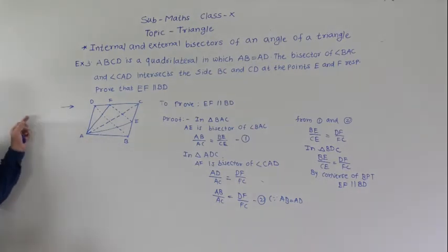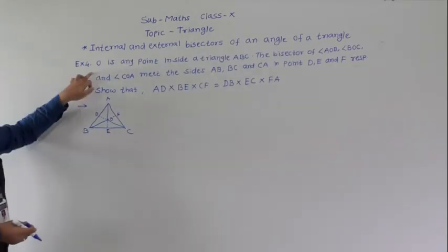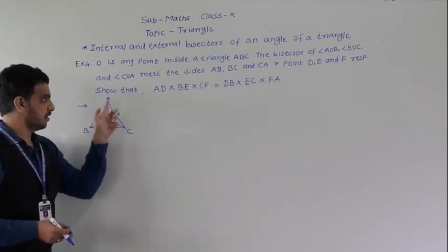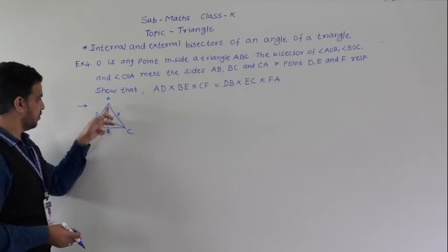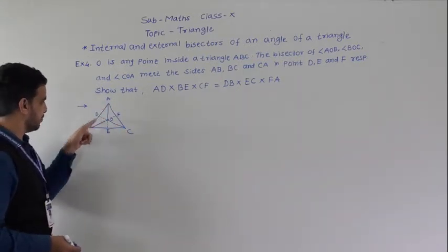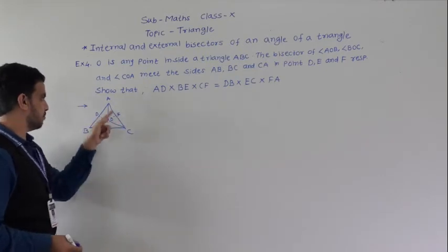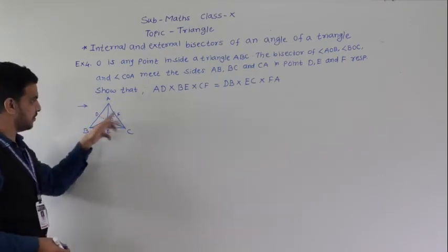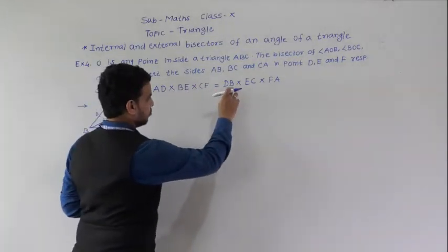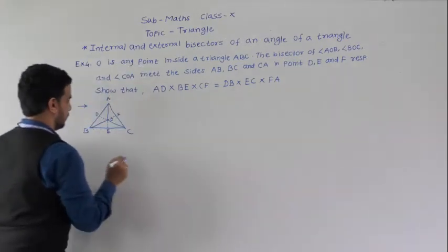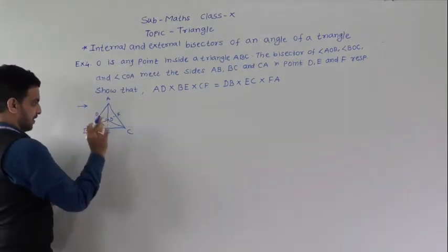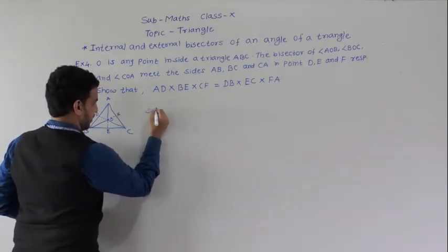Fourth example: O is any point inside triangle ABC. The bisectors of angle AOB, angle BOC, and angle AOC meet the sides AB, BC, and AC at points D, E, and F respectively. We have to show that AD × BE × CF = DB × EC × AF. We use the internal angle bisector theorem.